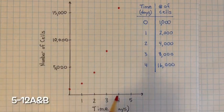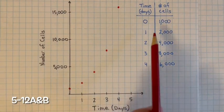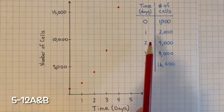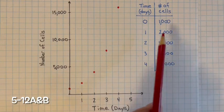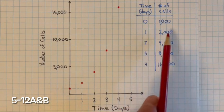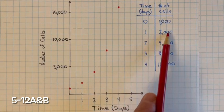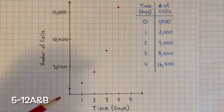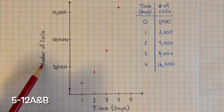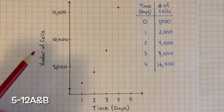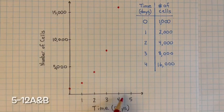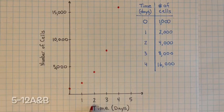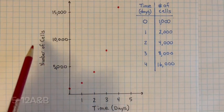Second, we need to create a table and a graph for this situation. Here's the table — the number of cells — and I increased it all the way to four days because it's doubling each day. So 2,000 times 2 is 4,000; 2 multiplied by 4,000 is 8,000; 2 multiplied by 8,000 is 16,000. The number of cells is the dependent variable and days is the independent, because the number of cells depends on how many days the bacteria has been growing. Time will always be your x-variable and the independent variable.